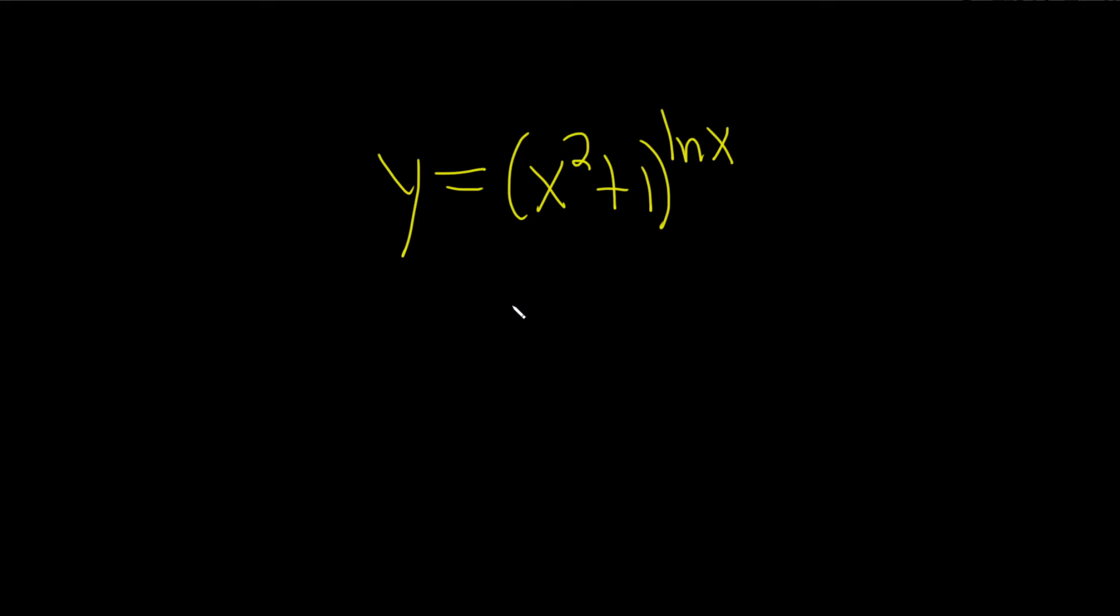So I'm thinking maybe a good way to do it is to use logarithmic differentiation. Logarithmic differentiation says that you first take the natural log on both sides. So this is the natural log of y equals the natural log of the right-hand side, so x squared plus 1, and this is to the ln x.